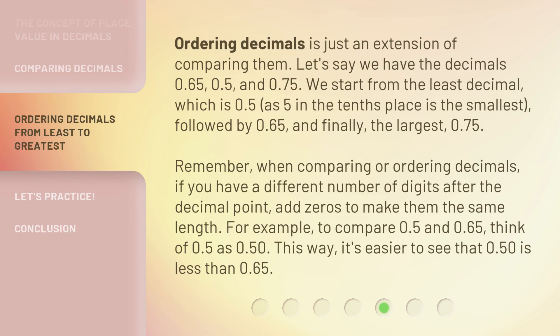Ordering decimals is just an extension of comparing them. Let's say we have the decimals 0.65, 0.5, and 0.75. We start from the least decimal, which is 0.5, as 5 in the tenths place is the smallest, followed by 0.65, and finally the largest, 0.75.